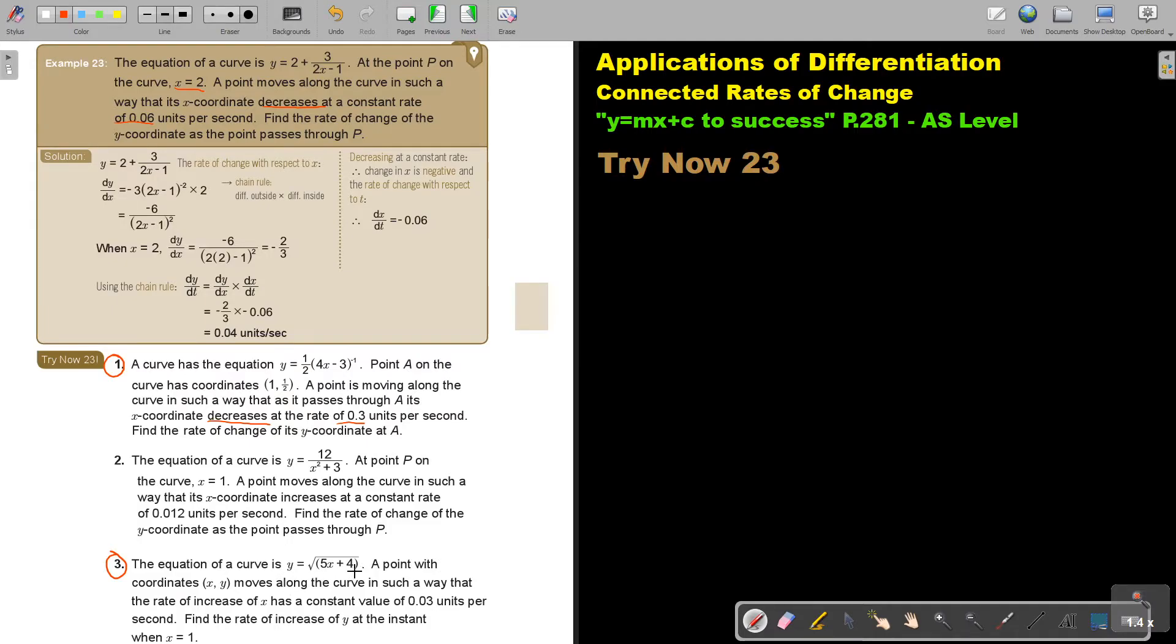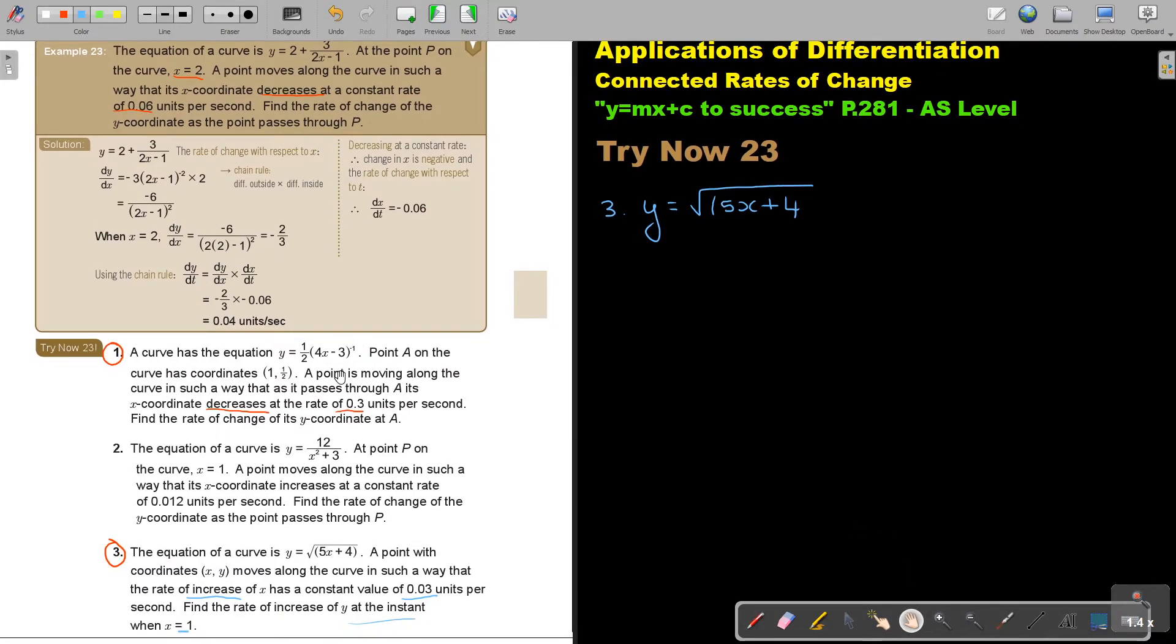Sometimes it's just the functions is more complicated. So you must, if you struggle with the chain rule, first go and revise the chain rule again. Don't let that be the difficult part in the question. The equation of the curve, and now what is the equation of the curve? It's going to be 5x plus 4. At point with coordinates x, y. Move along the curve in such a way that the rate of increase is 0 units per second. Find the rate of increase at y at the constant when x is 1. This is why just because they're not giving me a coordinate, but they tell me x is 1. I need that.